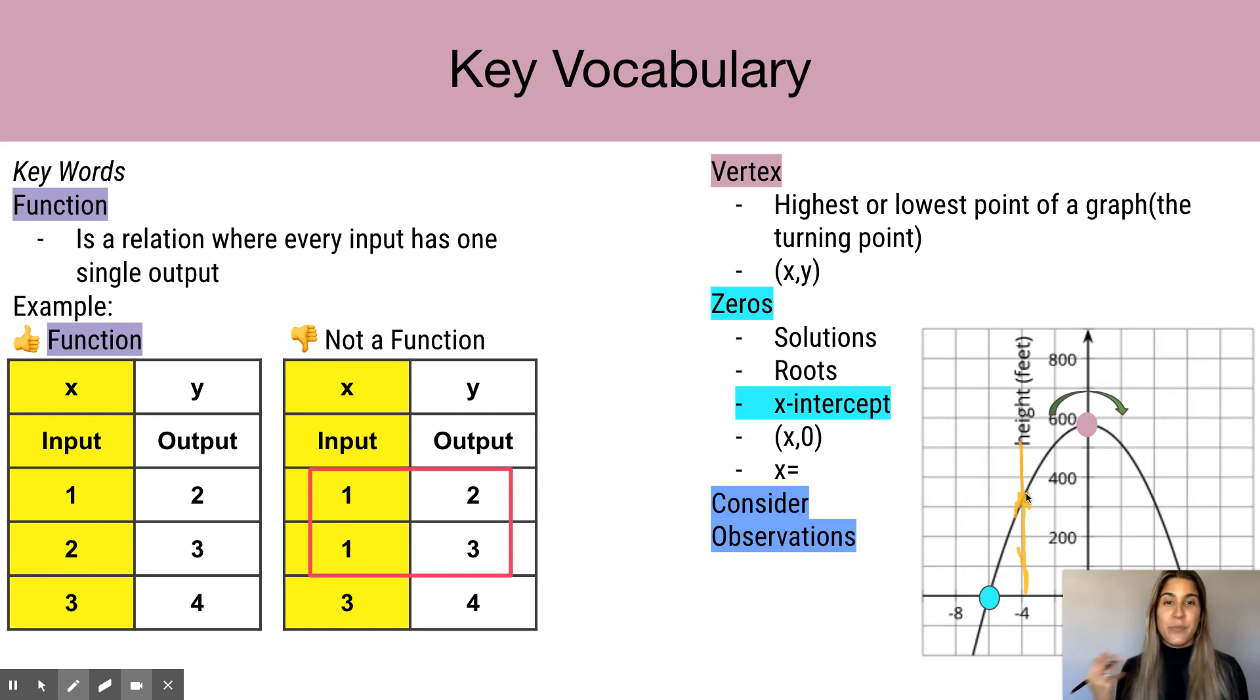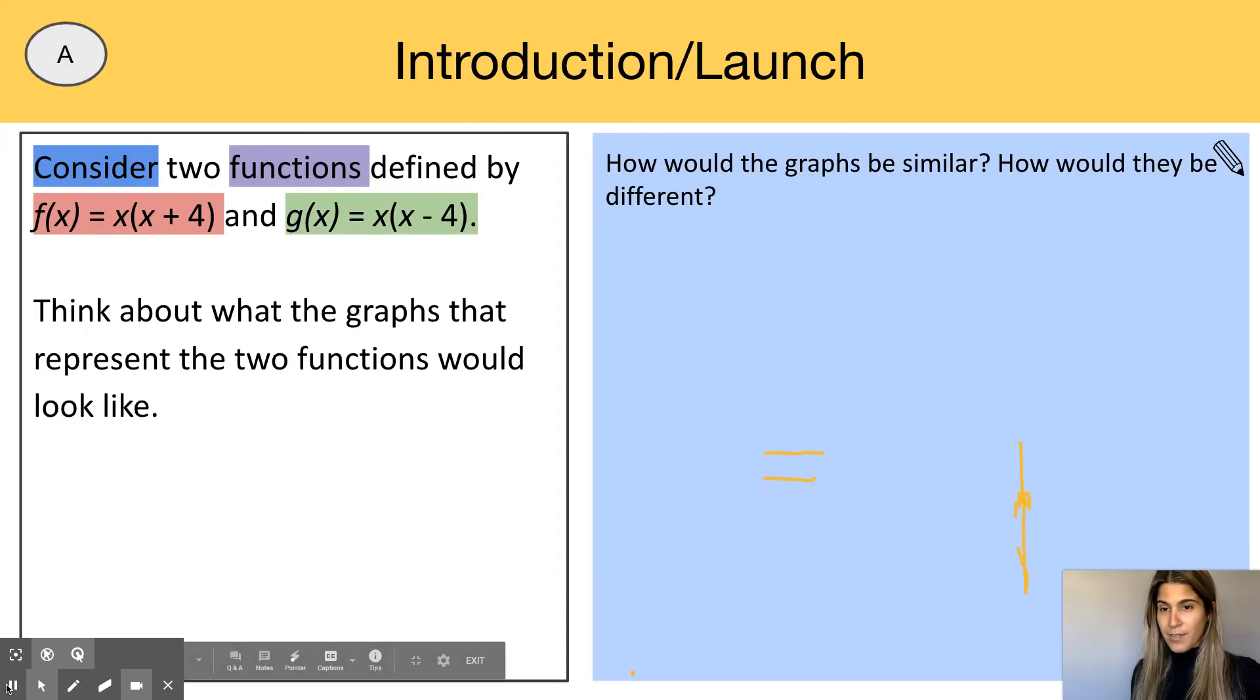The other words we're going to look at, we've seen in our previous lessons, and hopefully you're getting more familiar with these words. We're going to look at the word vertex, which is that highest or lowest point on a graph. Remember, it's a coordinate, an x and a y. We're going to look at the word zeros. Remember, x-intercept and zeros, we are referring to the same thing, and we can express it in different ways. We can write it in this way, or we can write it as x equals. And the words consider. What does it mean to consider something? And what does it mean to make an observation?